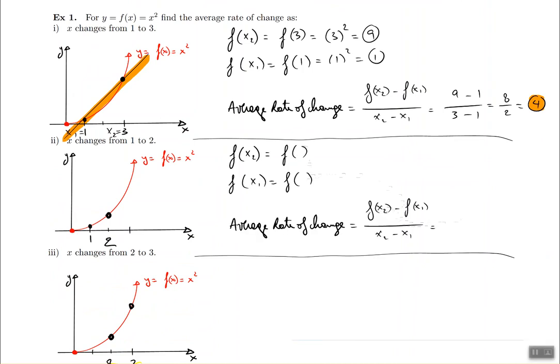So for this time we are changing from 1 to 2. So x2 is going to be 2, x1 is going to be 1. So f of 2 is going to be 2 squared because the function is x squared and that's going to be 4 eventually. And f of x1 meaning f of 1 is going to be 1 squared again and the answer here is going to be still the number 1.